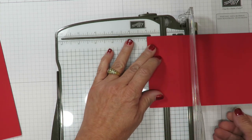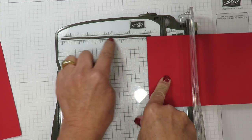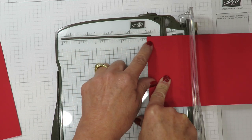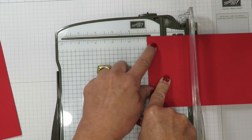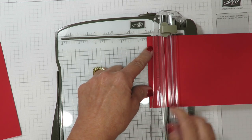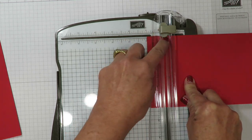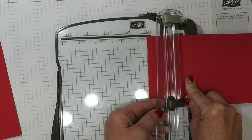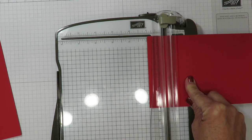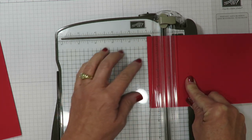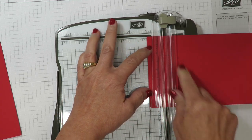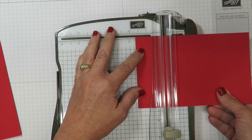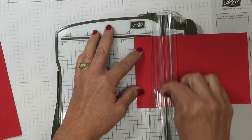I'm going to do two score lines on each panel. The first one is going to be at one inch. The Stampin' Up paper trimmer has a wonderful ledge here at the top which will ensure that my cardstock is straight inside the trimmer. I'll score at one inch and then I'm going to slide over to one and three quarters inch and score. I'm going to repeat that now on the second piece.